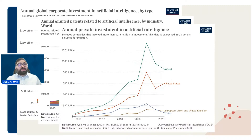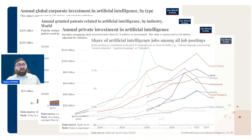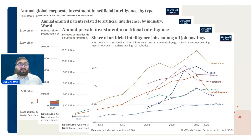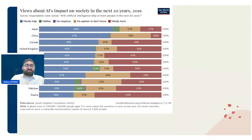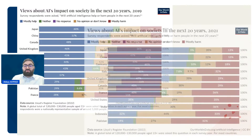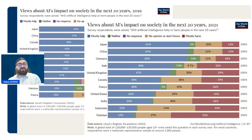Private investment is also growing, with more and more companies investing in artificial intelligence. This investment reflects on the jobs offered in the market today — we have a surge in artificial intelligence jobs. This surge is also changing our perception of AI. If we look at the OECD AI Impacts on Society scale, from 2019 to 2021 we see a positive trend. Some countries see AI as harmful, but those are exceptions — globally, people are seeing the advantages.